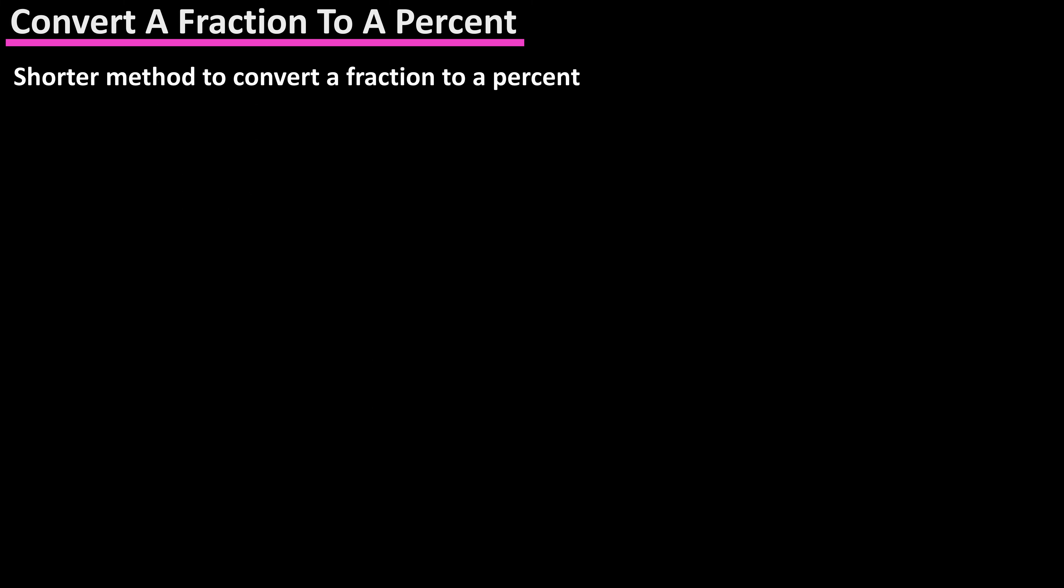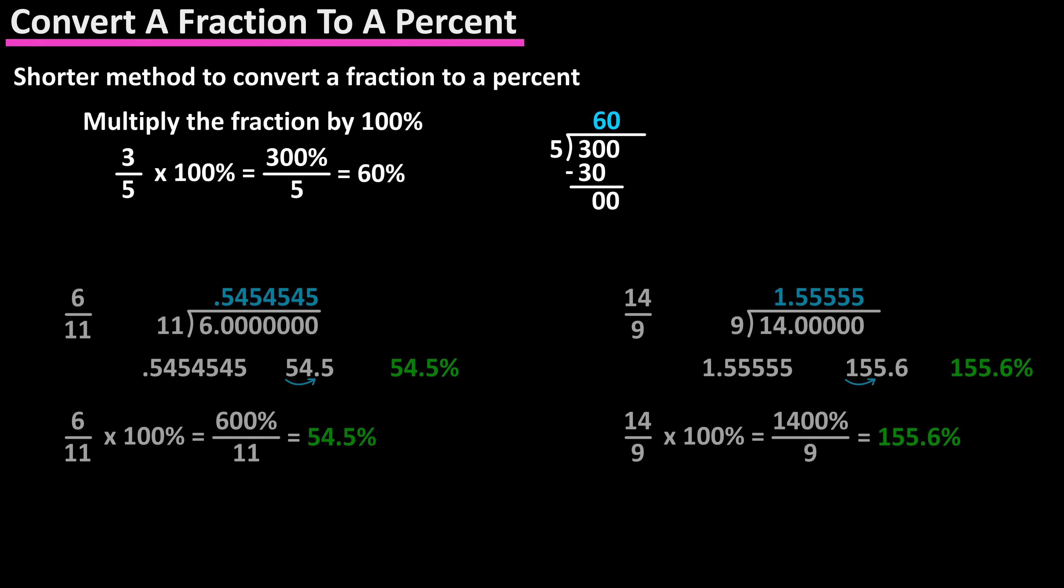And there actually is a second, much shorter way to convert a fraction to a percent. We just multiply the fraction by 100%. For example, 3 over 5. We multiply by 100% to get 300% over 5, and dividing out, we get 60%. Here are a few more examples of both methods written out for you.